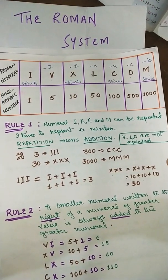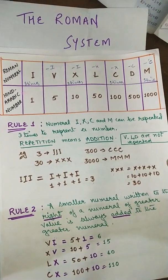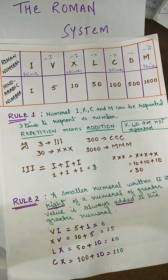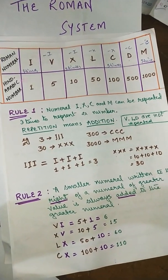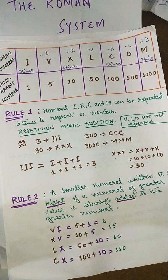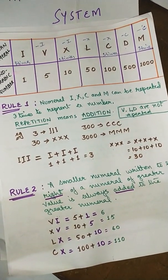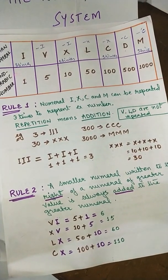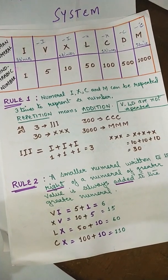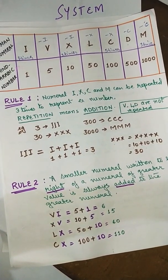Hello children, today we are going to learn about the Roman system. As you have learned in the previous class, Romans use seven symbols to write any number. They do not use any digits. There is no zero in the Roman system, and also the Roman system does not use place value. It uses rules of addition and subtraction of the seven numerals to write any number.